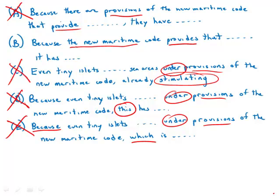B is the only one that is direct, active. It has the active form of the verb provides. It puts the new maritime code as the subject of the sentence. It has no grammatical errors. It is by far superior to all the other answer choices.